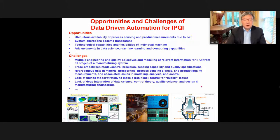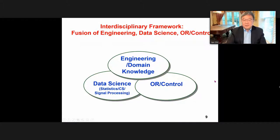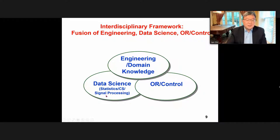To make success, three pillars are very important. One is engineering domain knowledge — understanding the physics and engineering of the process. Second is data science broadly: statistics, computer science, signal processing, machine learning, and so on. Third is operational research, automation, and control theory. Only when these three pillars work together can we do a good job in data-driven automation for in-process quality improvements.